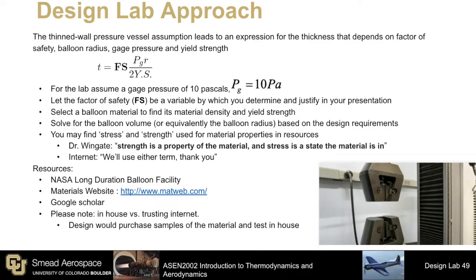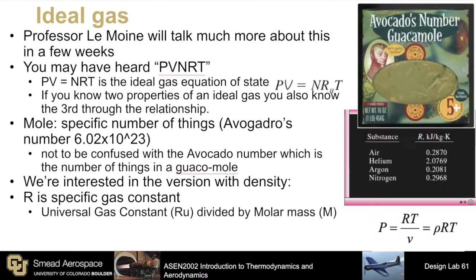We can provide approximate values for you to use as a sanity check. The last piece to the design derivation is how to determine the parameters of a gas knowing other parameters — this is where we'll apply the ideal gas law. The lecture will cover this in more detail in coming weeks, but I'm going to touch on the aspects that apply to the balloon design so you may advance in your design process. We will assume that the gases associated with this design lab can be assumed ideal, and you will see that this is a valid assumption.